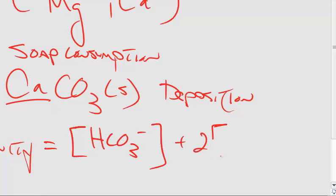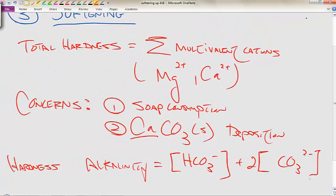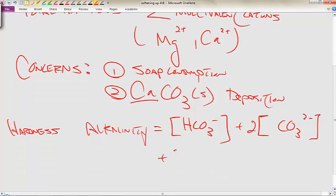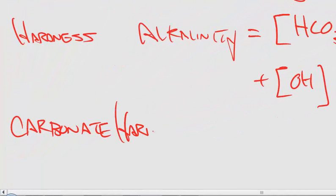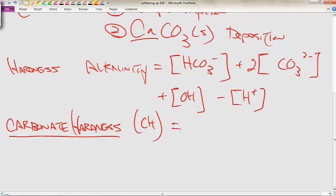Alkalinity is defined as the sum of HCO3 minus plus 2CO3 2 minus plus hydroxides minus the hydronium or hydrogen. Carbonate hardness, and this will get explained further in some other videos I'm going to have you watch. This is typically abbreviated as CH. Carbonate hardness is equal to the calcium and magnesium compounds in the water.